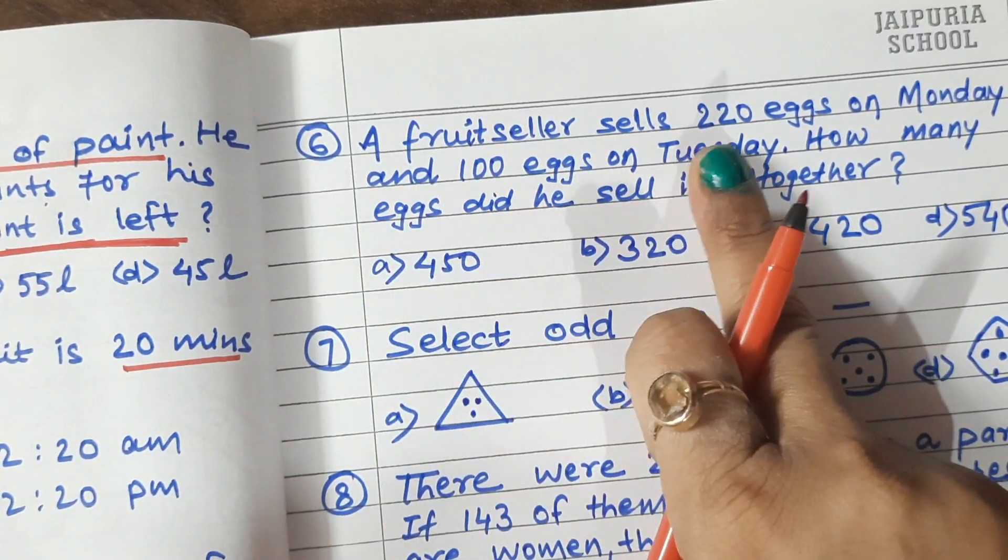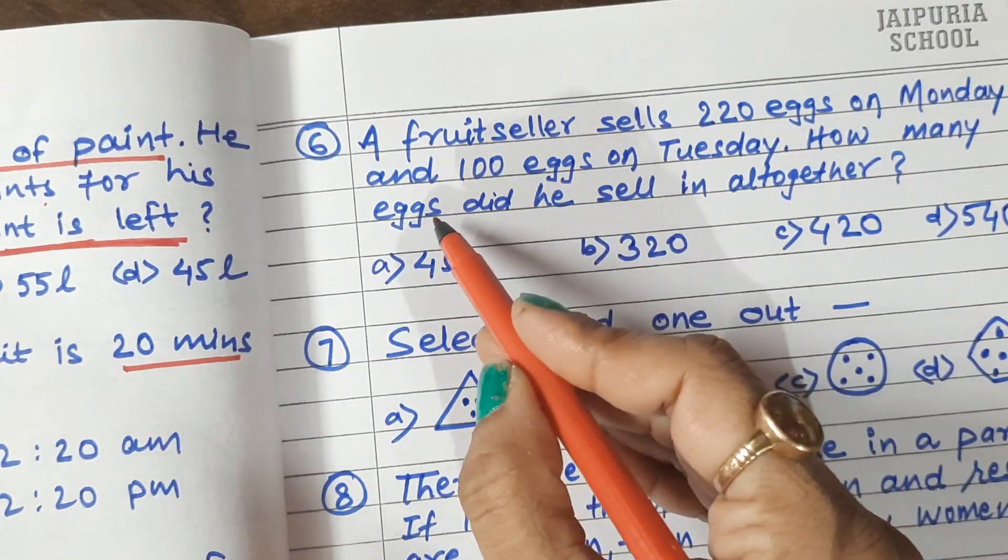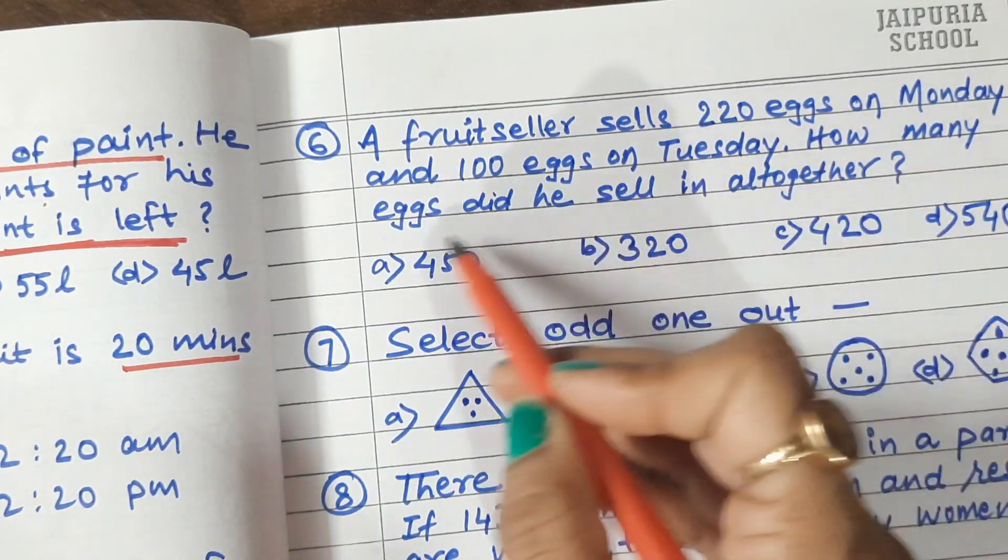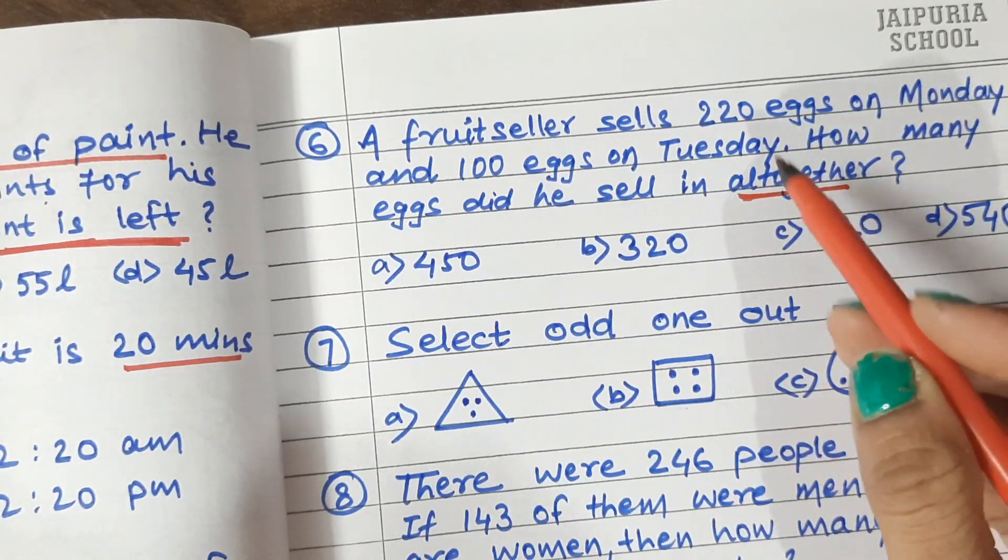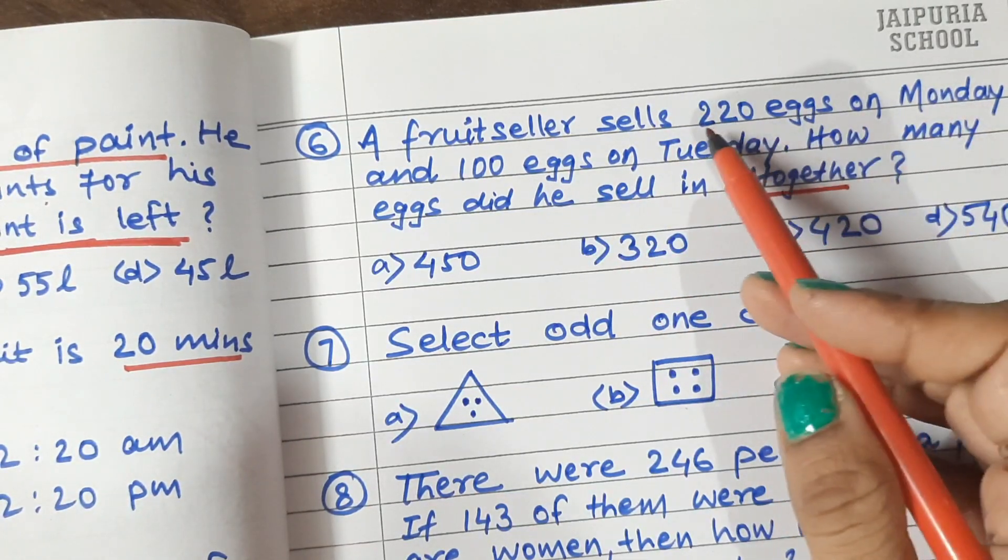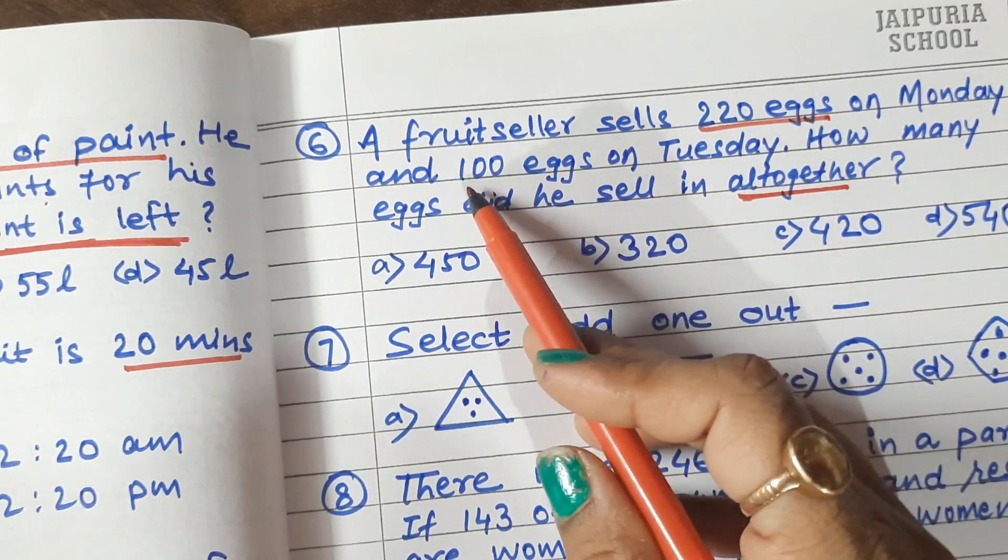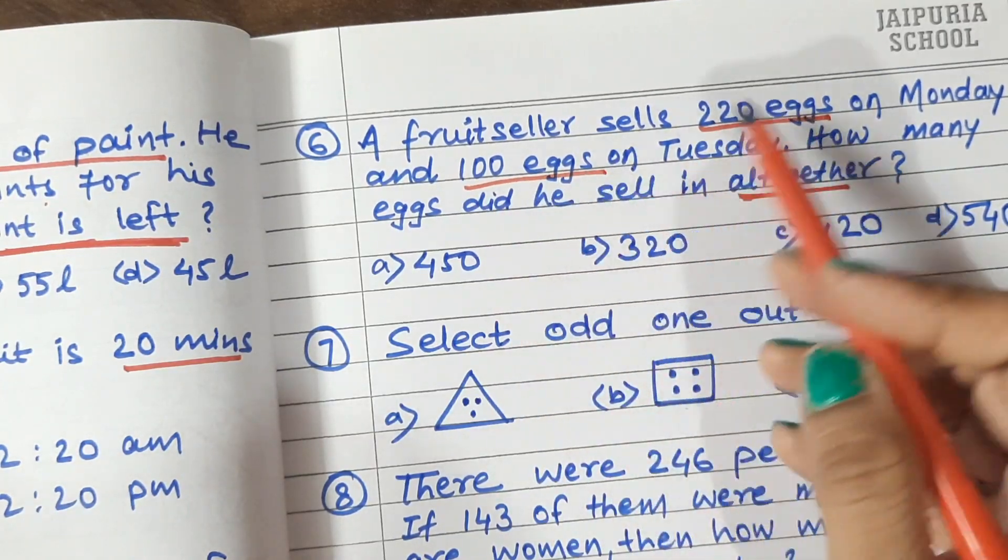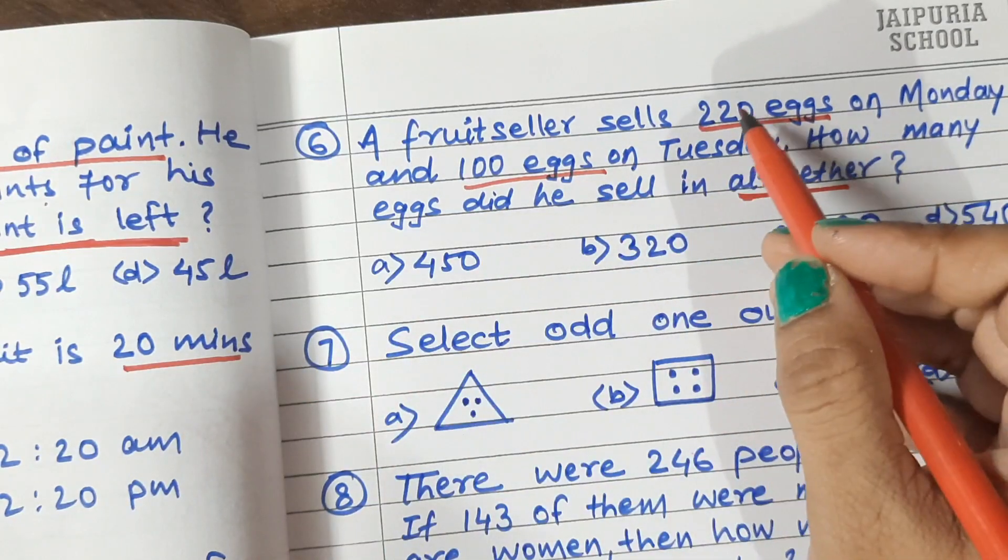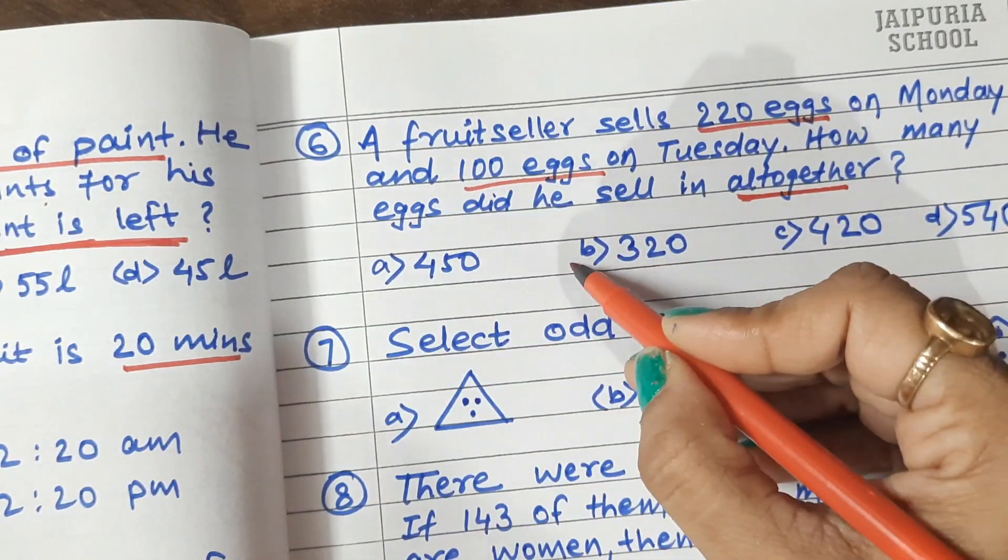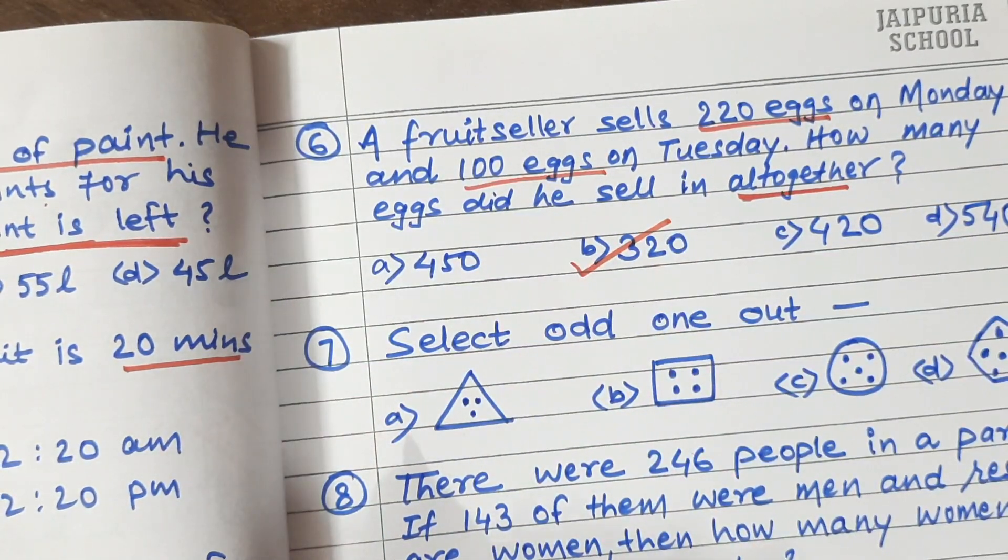Question 6: A fruit seller sells 220 eggs on Monday and 100 eggs on Tuesday. How many eggs did he sell in all together? All together, there is an addition vocabulary. So this will be added. Monday, he has sold 220 eggs. And Tuesday, 100 eggs. Now it's asking for the two days, how many eggs have been sold. So you have to simply add. 220 plus 100, that is 320 eggs. It will be also correct.